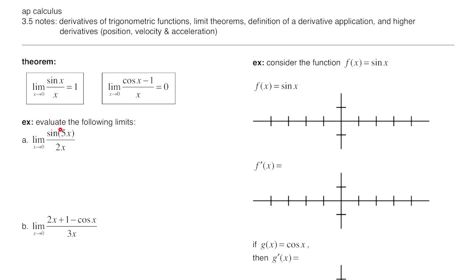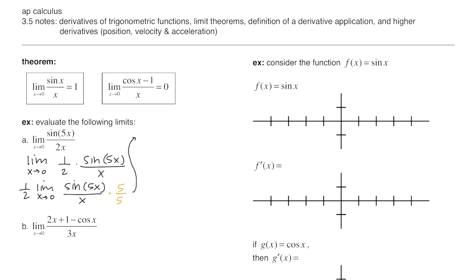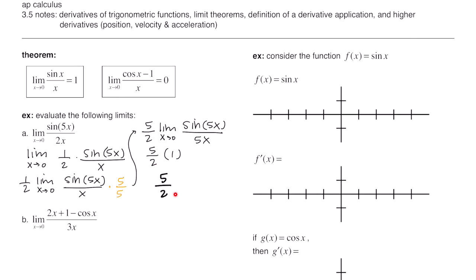For this problem, we have sine of 5x, so we need 5x in the denominator. I got rid of the 2 by pulling a 1/2 to the front of the fraction, so now we have 1/2 times sine of 5x over x. With limits, you can pull a constant to the front. To apply the theorem, we need sine of 5x over 5x, so we multiply by 5/5, move one 5 to the front, giving 5x in the denominator. According to the theorem this limit equals 1, so 5/2 times 1 gives a final answer of 5/2.